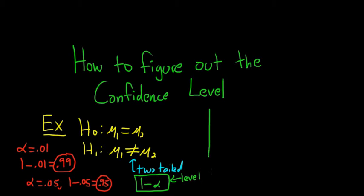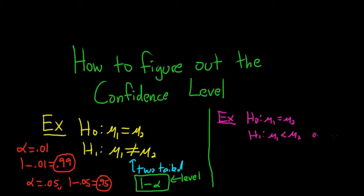Now let's say instead you had something different. Say we have the null hypothesis μ1 equals μ2, and then the alternative hypothesis is μ1 less than μ2 — or it could even be greater than. In this case, the hypothesis test is not called two-tailed; it's called one-tailed.